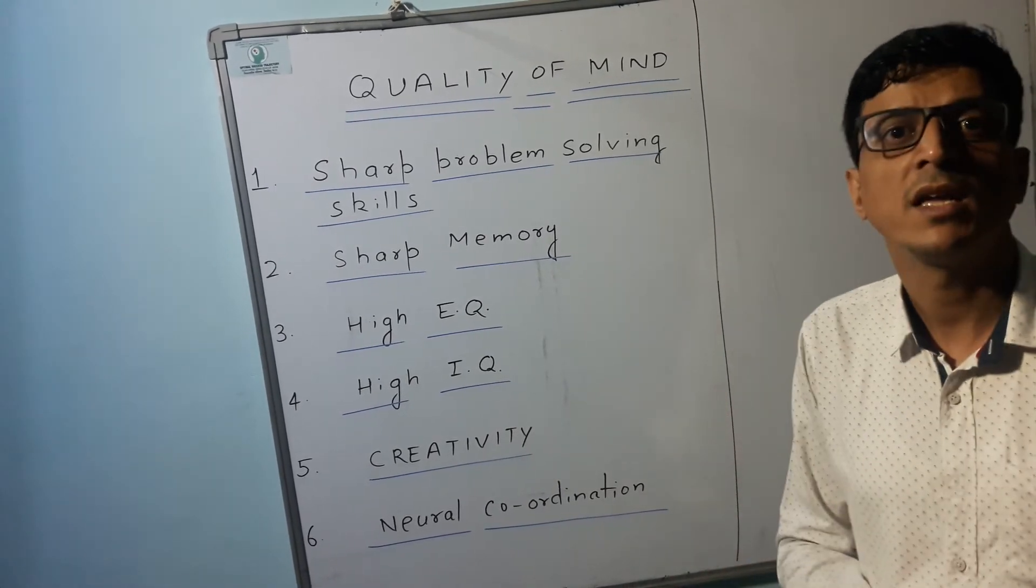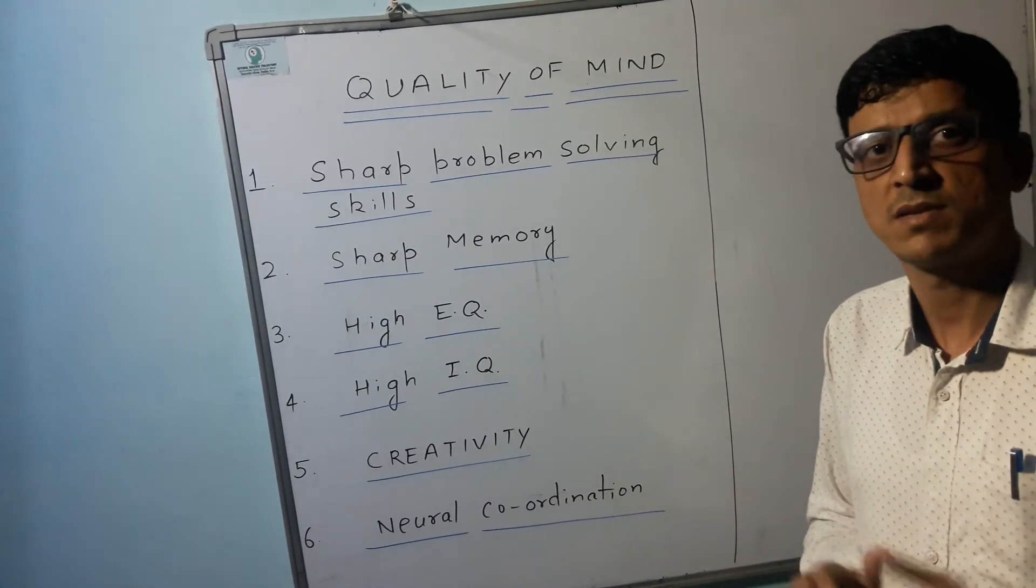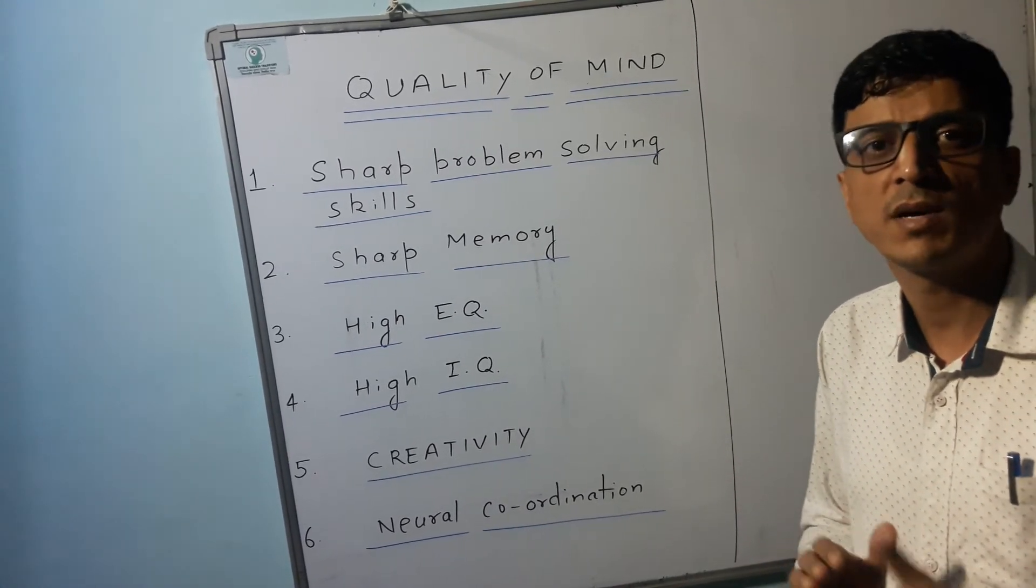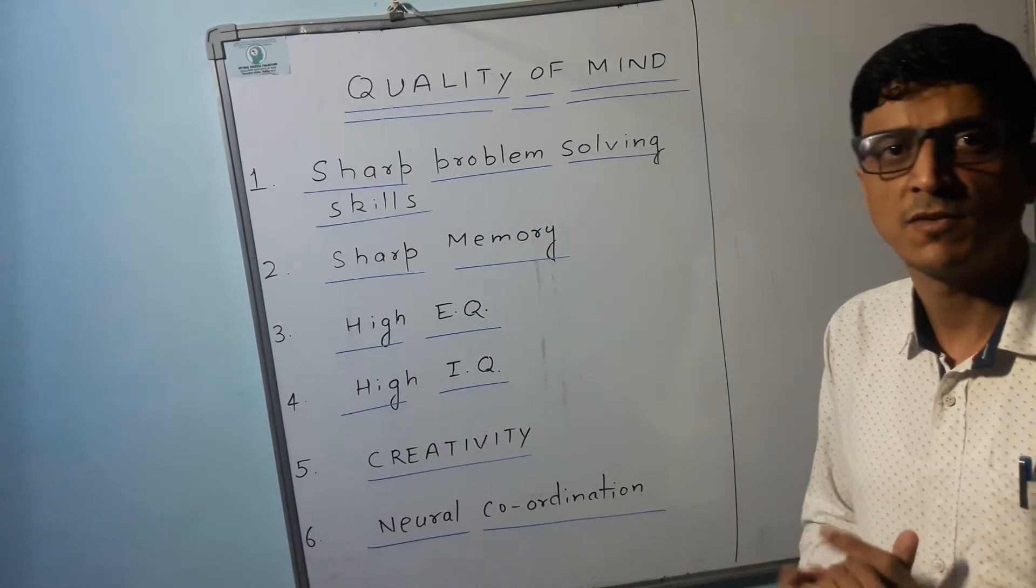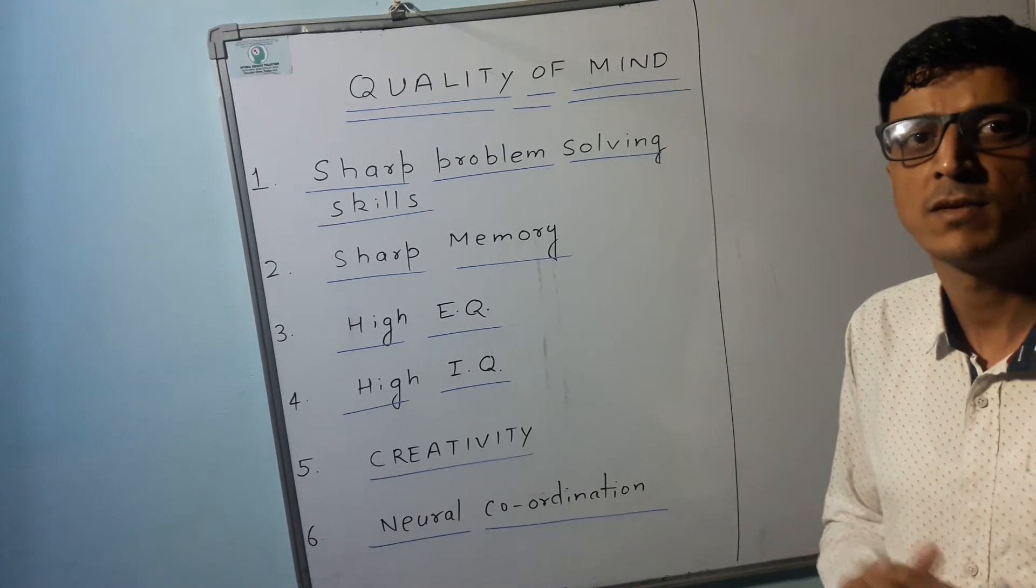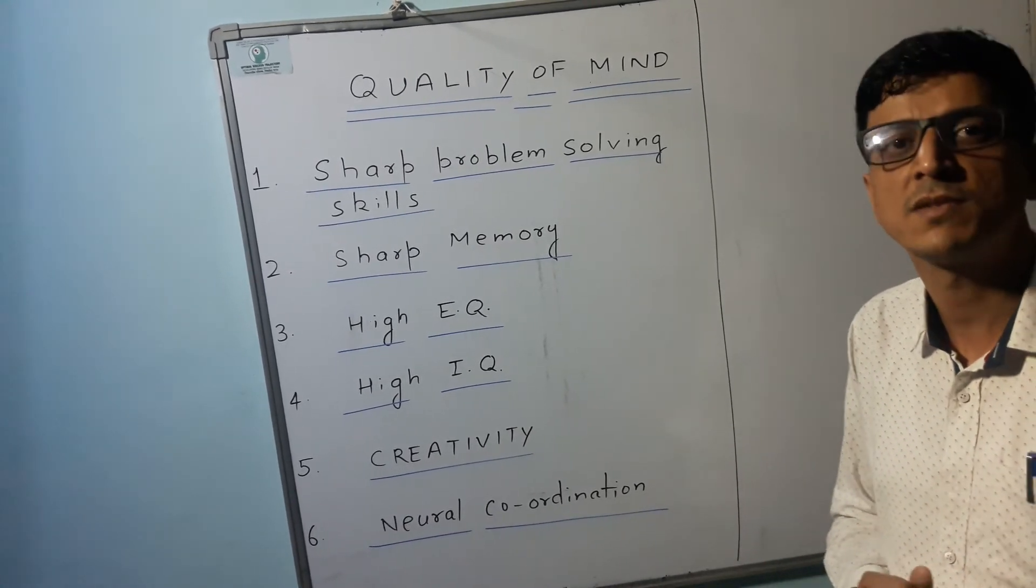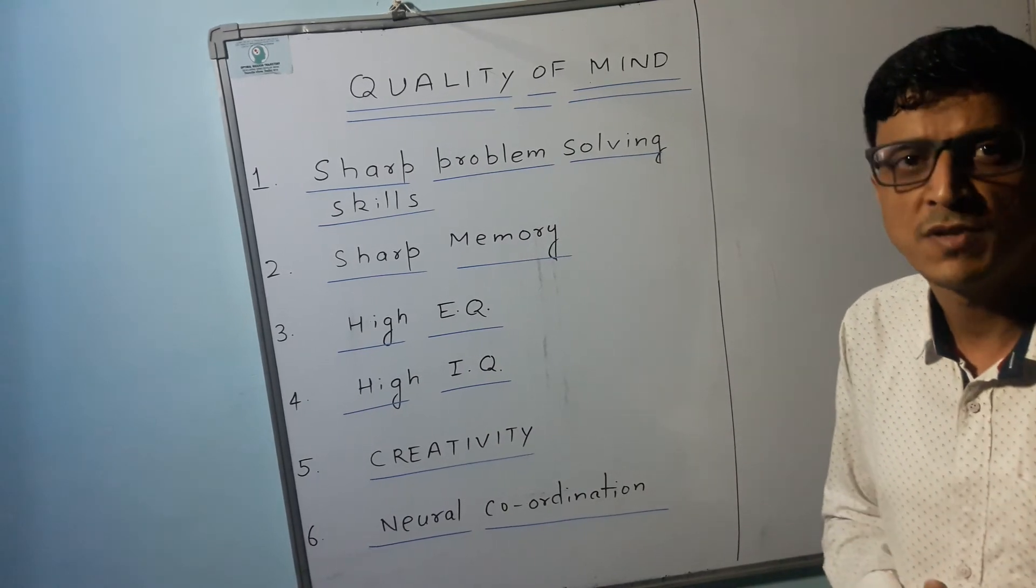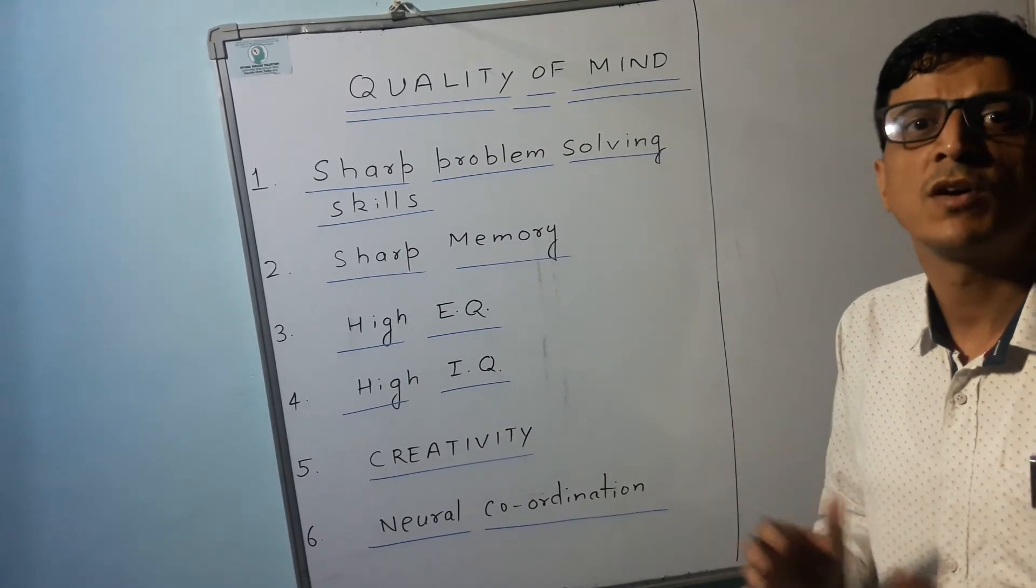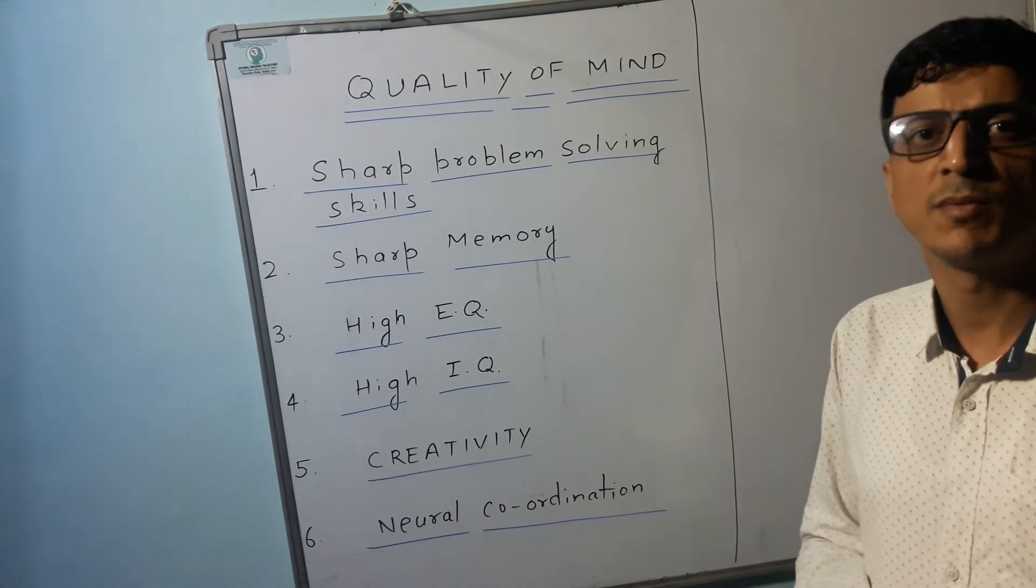Third thing is high EQ. EQ is emotional quotient. If you are easily depressed, somebody says something to you and because of which you become frustrated and negative then you need to work on your EQ which is emotional quotient. Because if you are so timid that anybody can make you lose your patience and can control your mind so easily then it is better to work on your EQ, emotional quotient. Be internally strong so that nobody can defeat you.